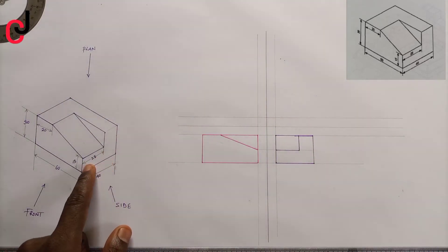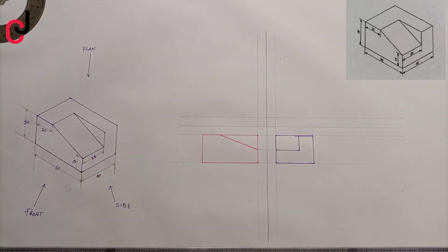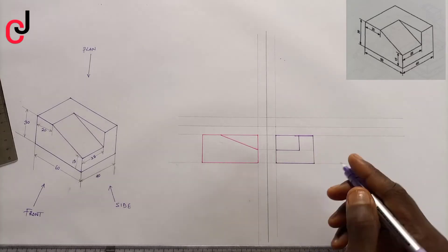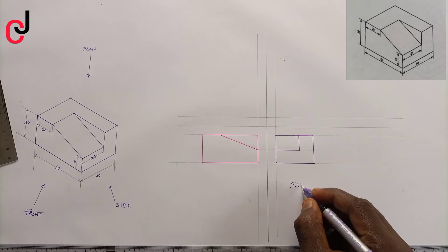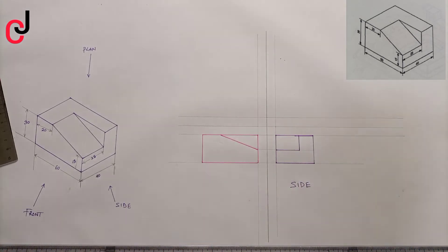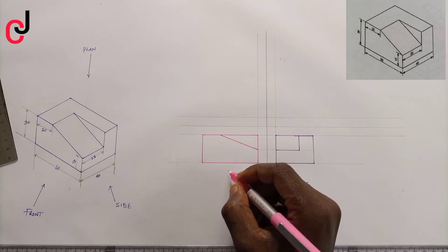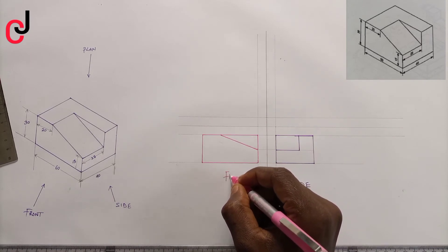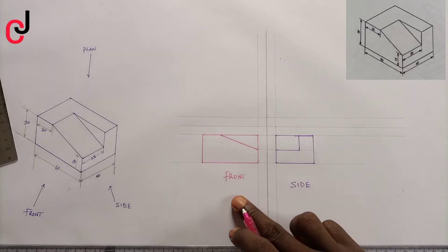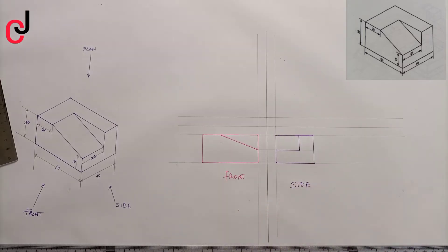You can see this and you can also see this. Now this is my side view and this is my front view. We'll now move into our plan.